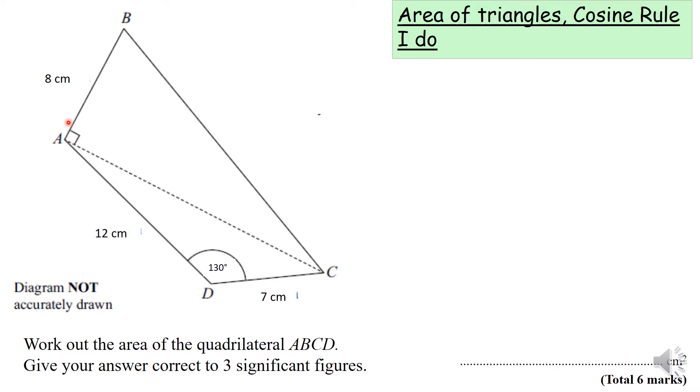There is a hint in the question that it involves something to do with triangles. There is a dotted line through the middle of this quadrilateral which shows us that this quadrilateral can be split up into two triangles.